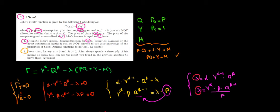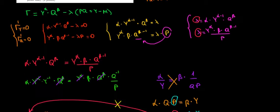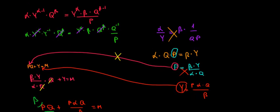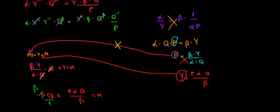Let's have a look at question 2 now. Prove that for any price and M which is greater than 0, we always spend a share of beta over alpha plus beta of our income on this pizza. We can use our results to prove this, so let's go to our results since we can use them.